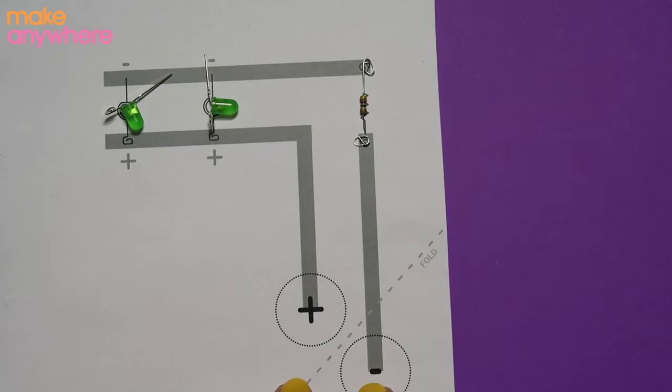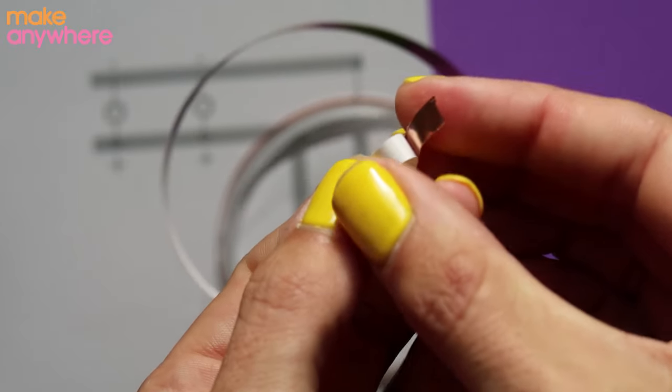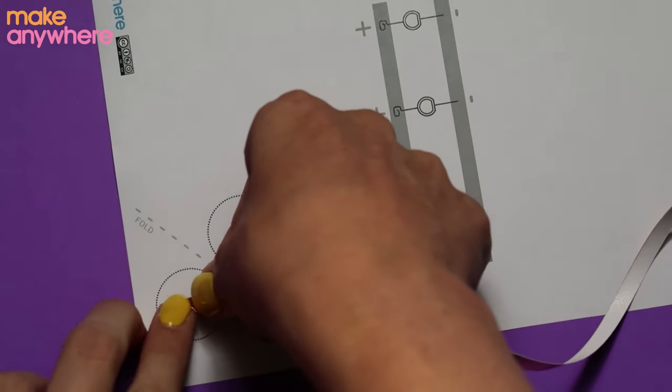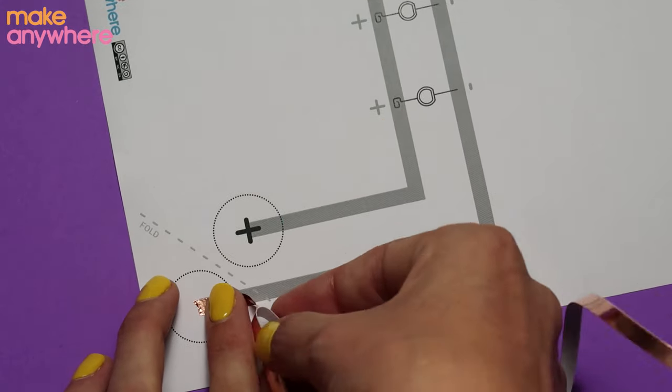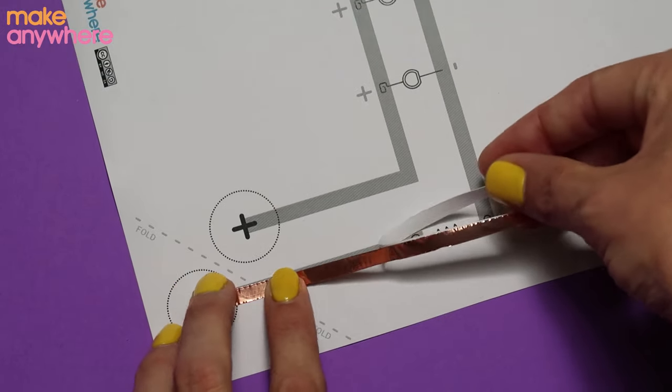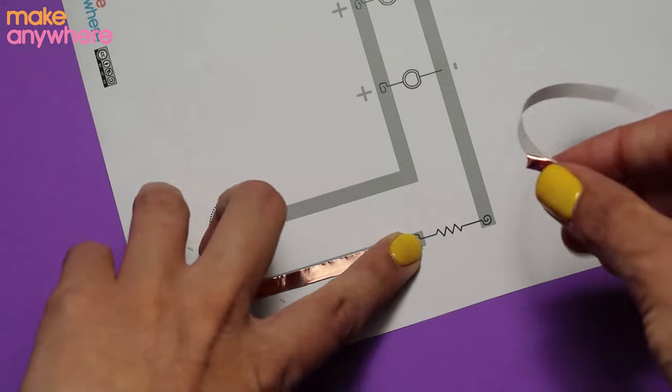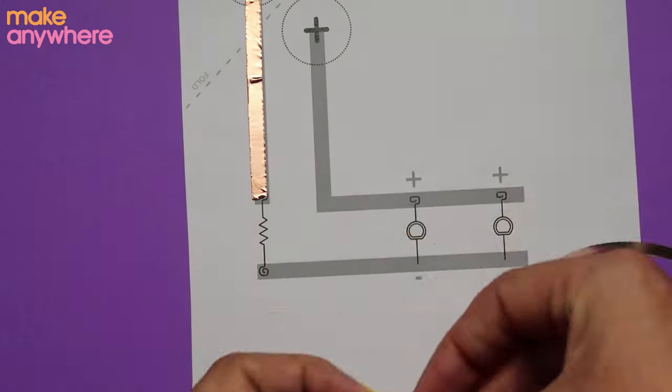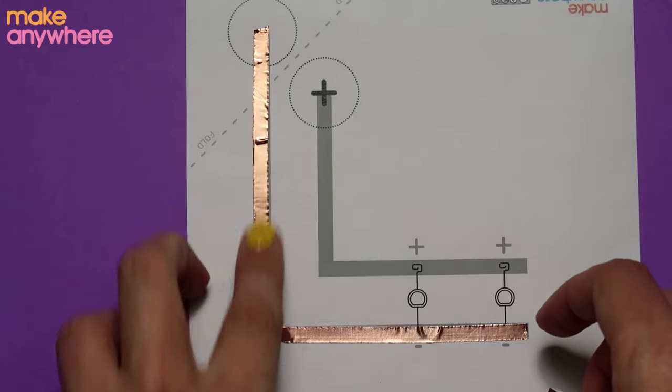So we're going to do the copper tape first and we're going to start in the middle of the negative circle. Take your copper tape and peel the backing off just at the beginning and bend the paper back. Starting in the negative circle go down and then slowly peel the paper away following the grey line. When you get to the end of the grey line push your finger down and pull the copper tape to rip it or use your scissors. So there's our first line. Our second one is going to go from here to the end. Great so that's our negative rail.